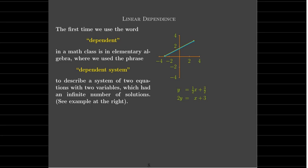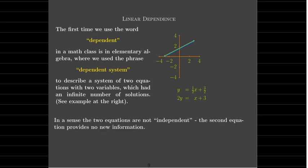The first time we encountered the word 'dependent' in a math class was probably in an elementary algebra class when learning about linear systems. If you had a system of equations in two variables, x and y, and the graphs of those equations overlapped — one equation was really just the same equation as the first one written in another form — we called that a dependent system, and there were infinitely many solutions. The second equation doesn't add any new or independent information, which is why we refer to the system as dependent.